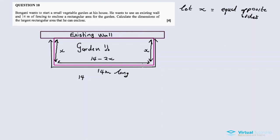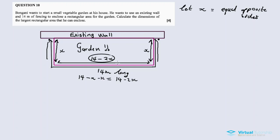The length of the fence is 14 meters from one end all the way across. We subtract this side and this side, so the long dimension equals 14 minus 2x. By letting the shorter sides equal x, it helps us to express the third dimension. So the long side is 14 minus 2x.